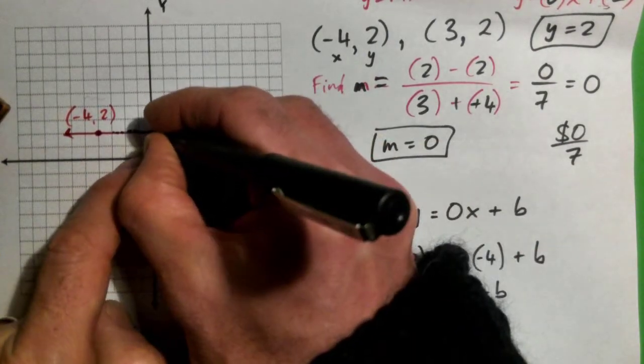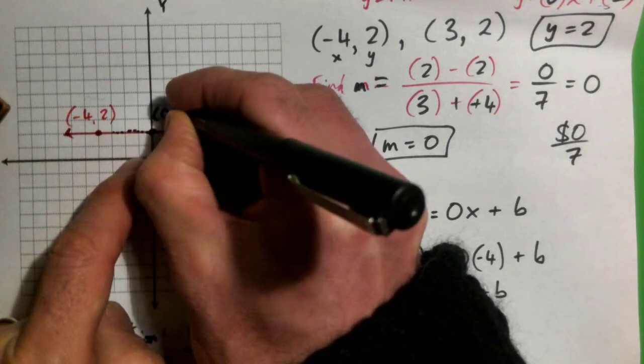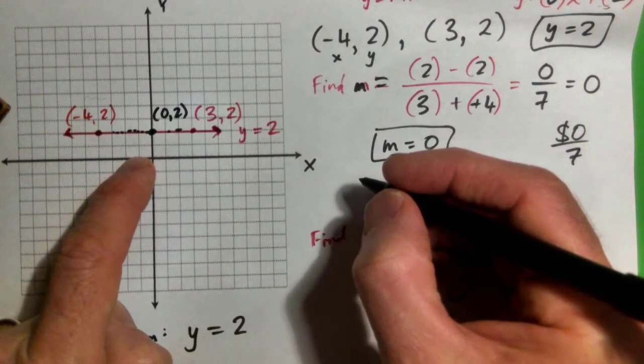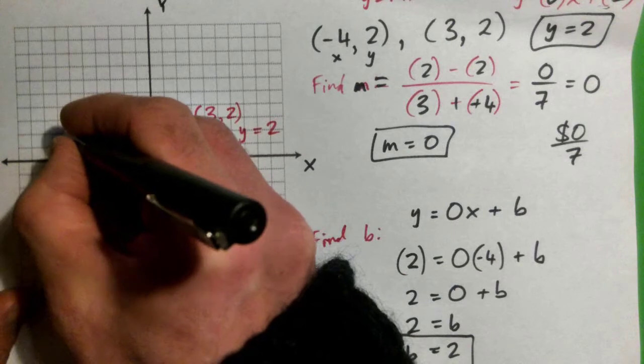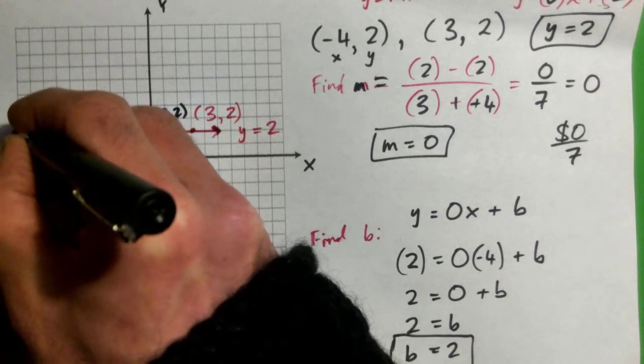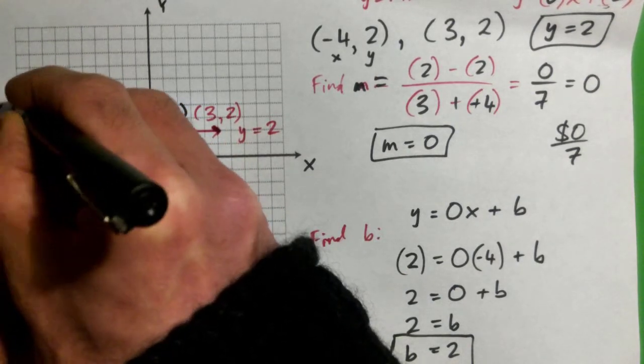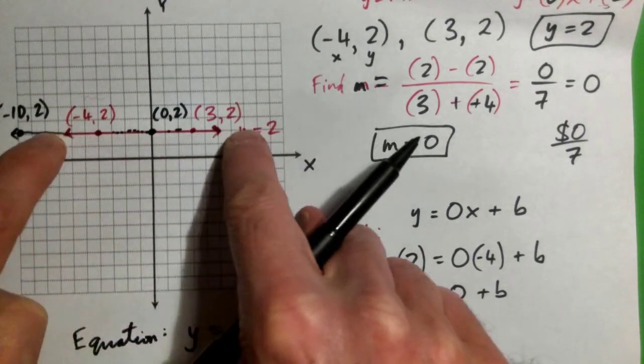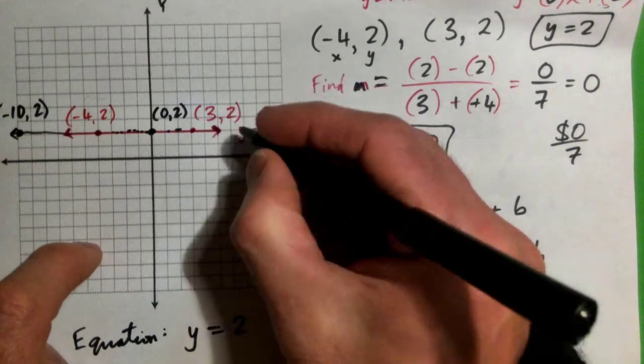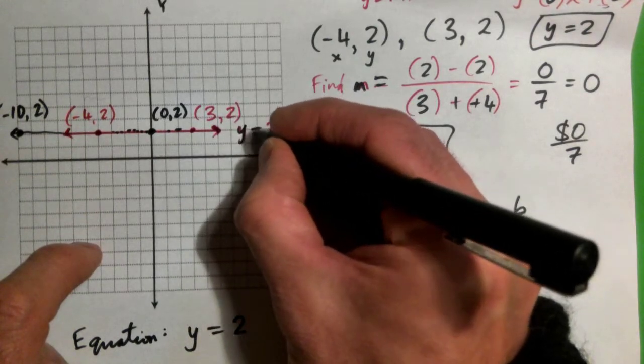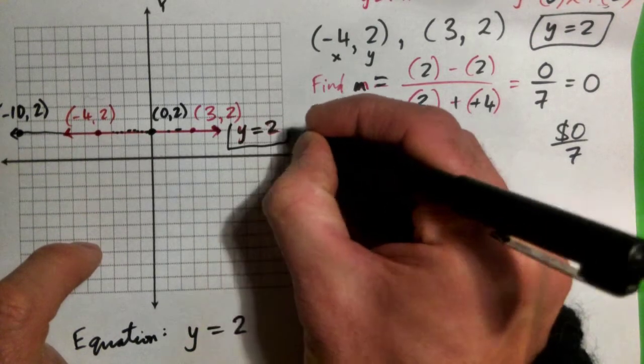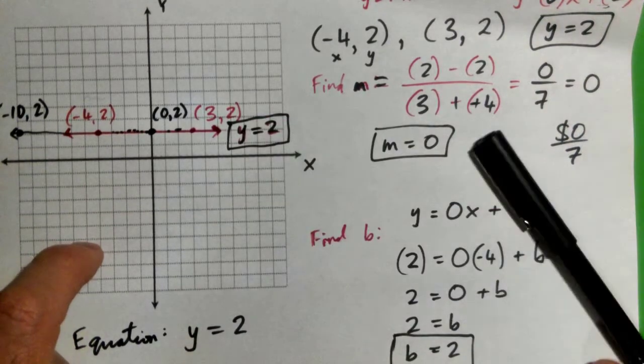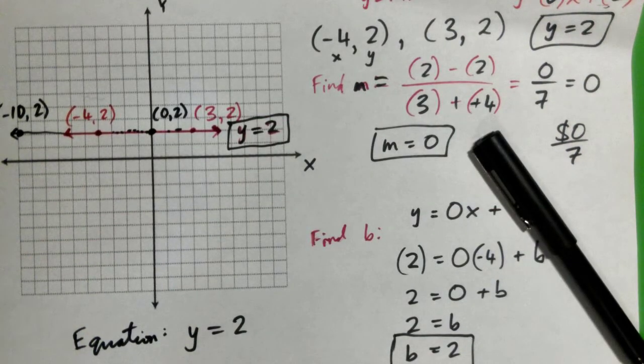Like, for example, this point here is 0, 2. The y value is 2. Or if I go in this direction on the line, this point here is -10, 2. Guess what? The y value is 2. So any point on this line, the y value is 2. And that's why our equation looks like this: y = 2, because all of the y values are 2.